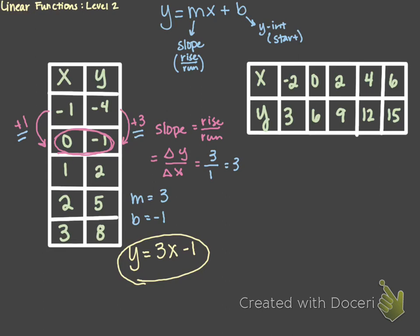Alright, we're going to do the same thing for our next table. The first thing we want to identify is our slope — that change in the y values over the change in the x values. If we look at the y values, we're going from 3 to 6, so we are adding 3; the change in y is positive 3. Looking at the change in the x values, to go from negative 2 to 0 we're adding 2. So we have 3 over 2 for our slope, meaning our m value is going to equal 3 halves.